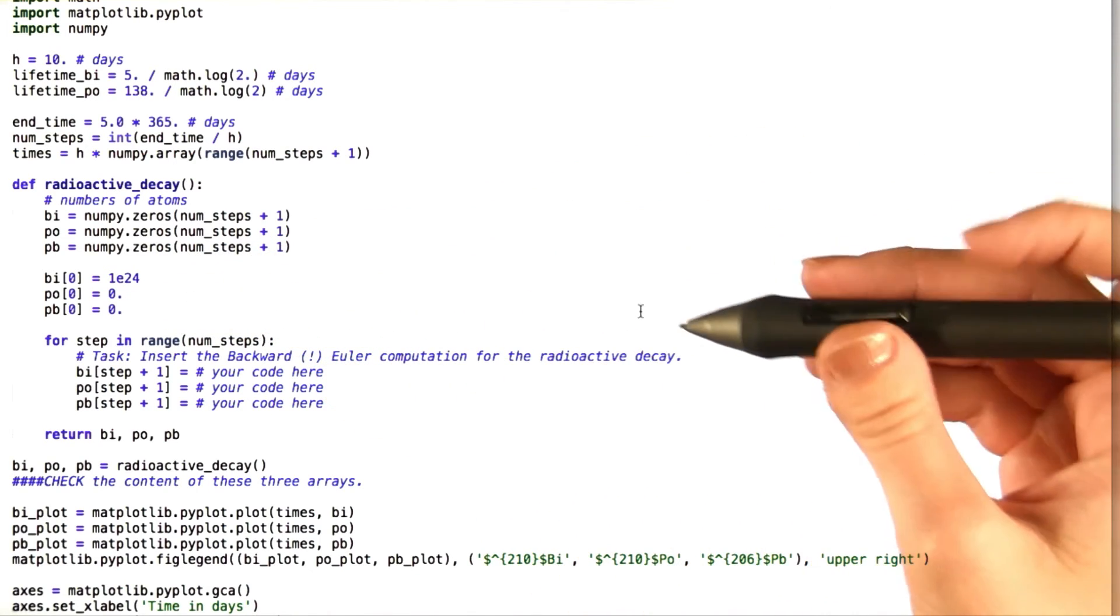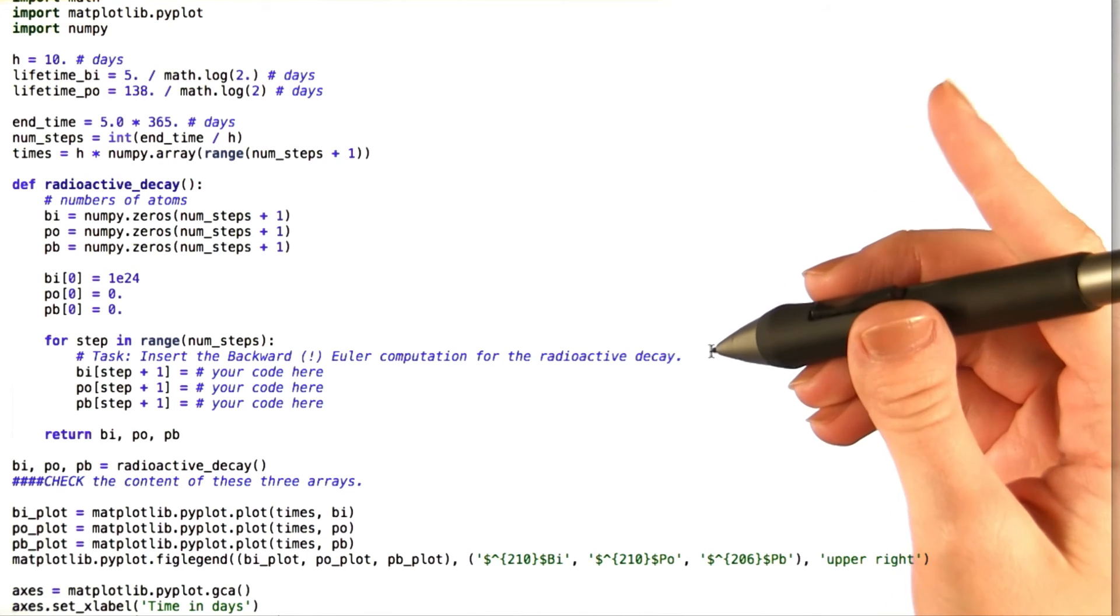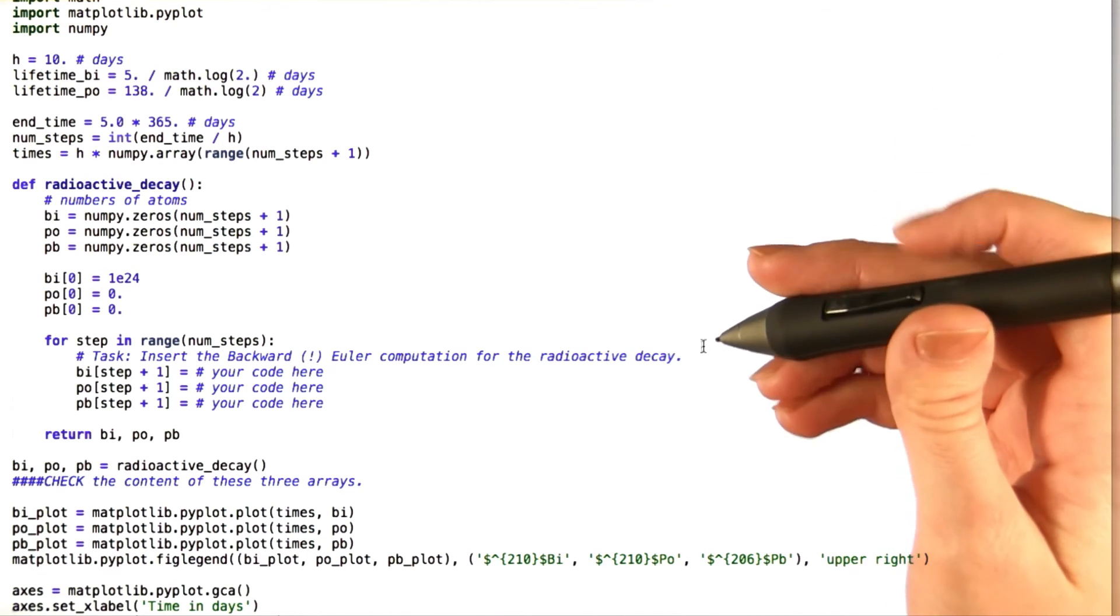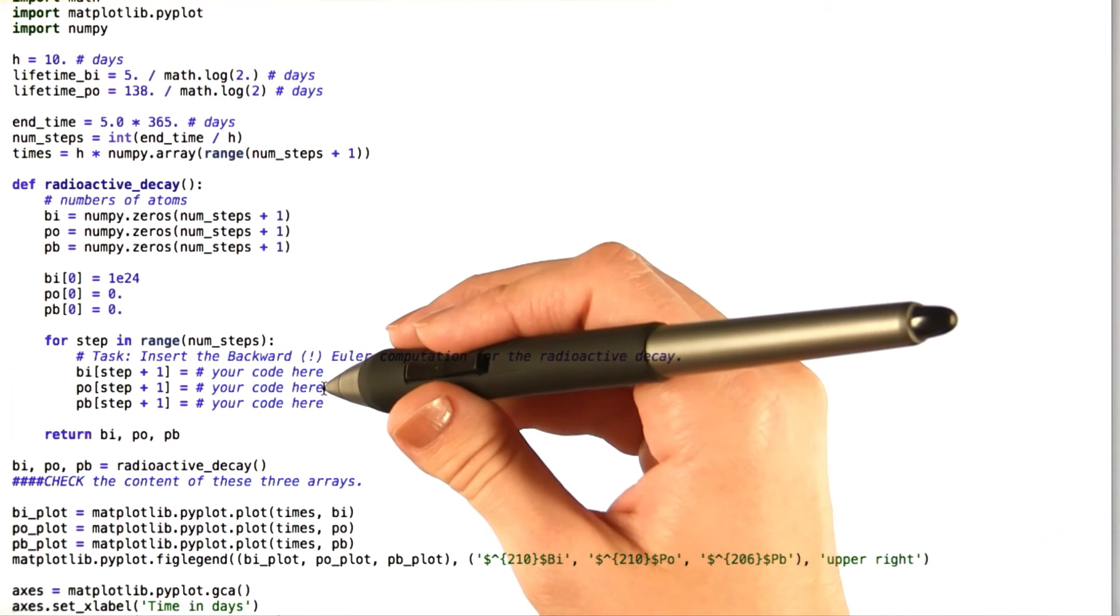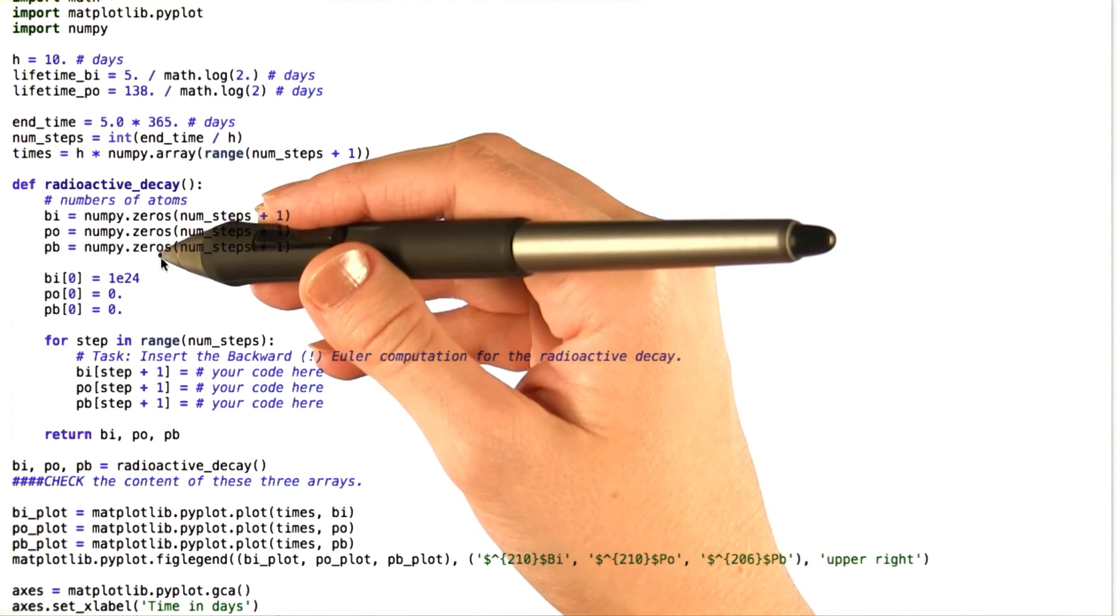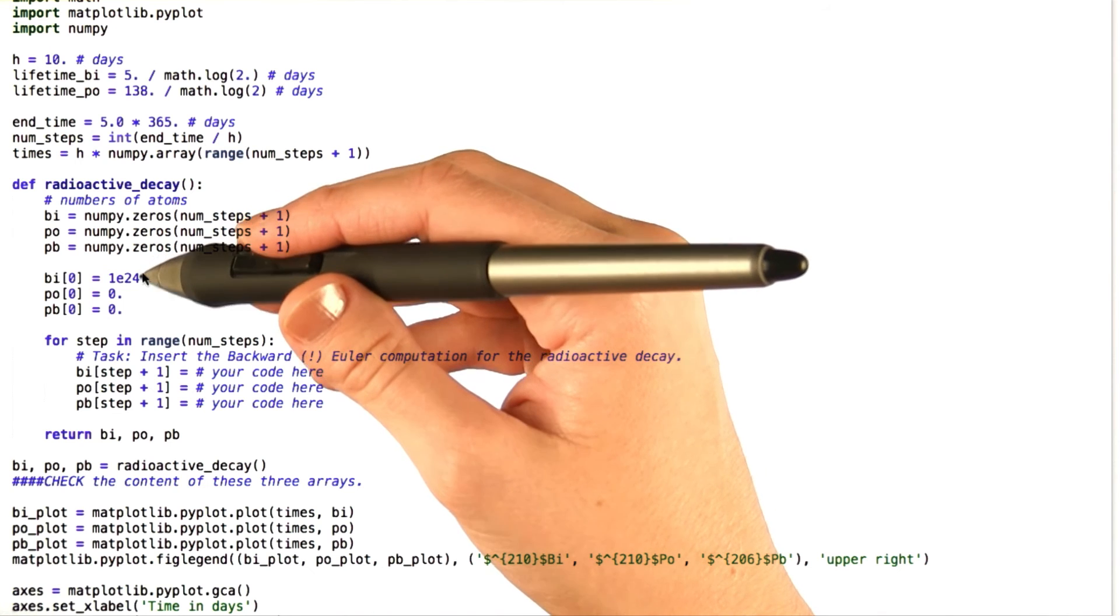What we would like you to do is to use the backward Euler, remember, backward Euler is not the same as forward Euler, to show how this decay process happens for each population of atoms. One more hint. Think about how the idea of logistic growth applies to this situation, and how that's going to affect the different rates of change of these populations.